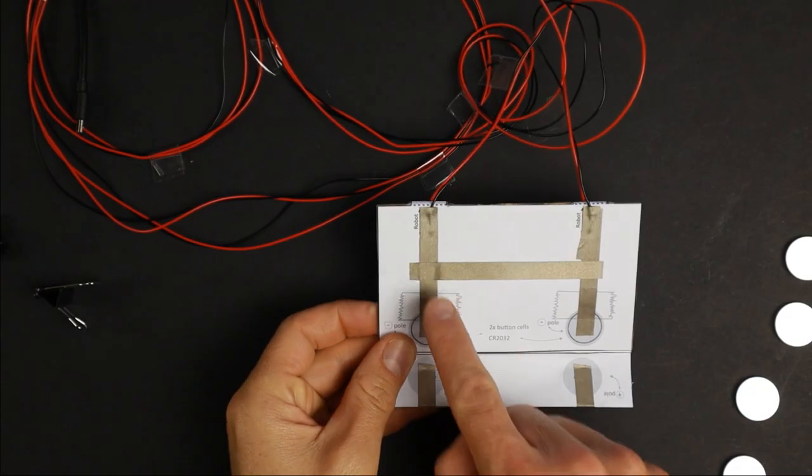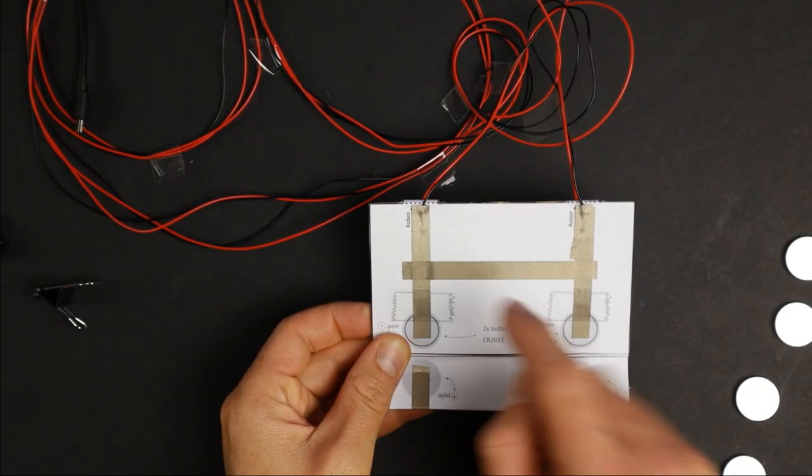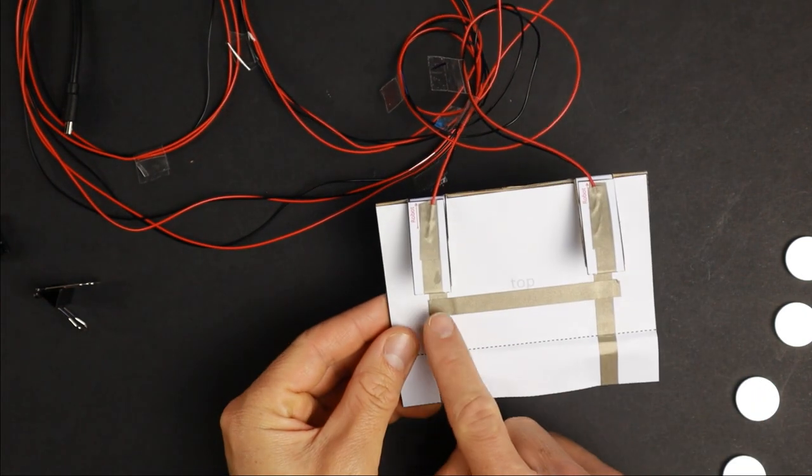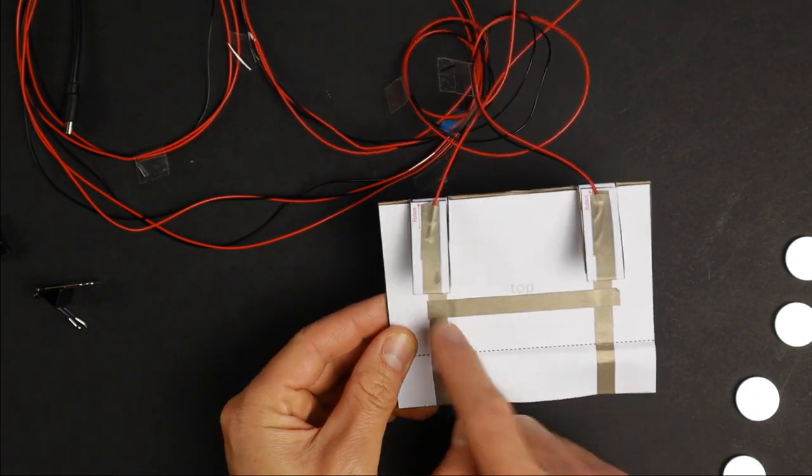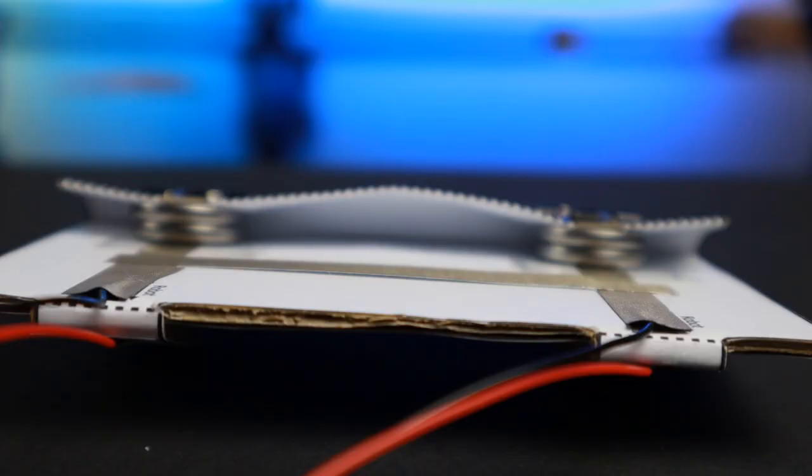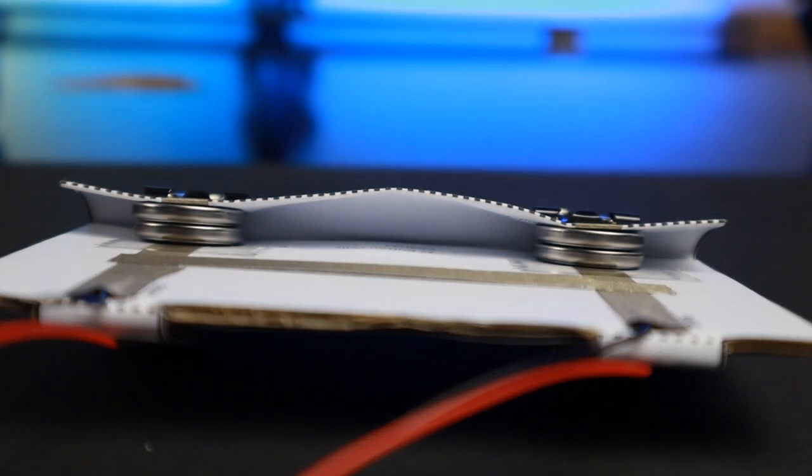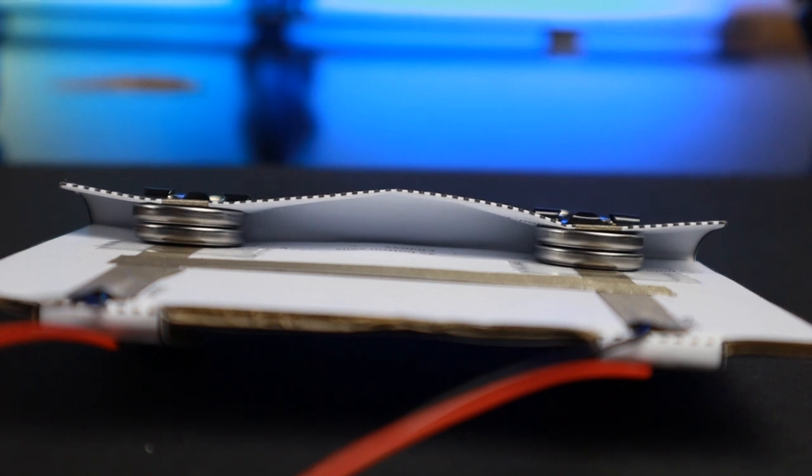If you want, you can connect the two circuits together like that. This connects the two battery stacks together and gives the robot another speed boost. But be aware that you have to have all batteries connected the right way for this to work. If not, you will short circuit all four batteries.